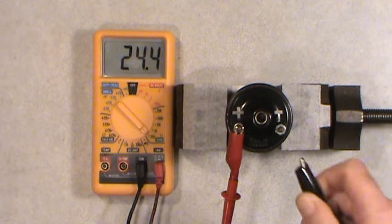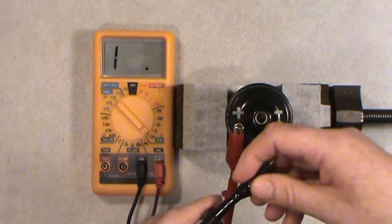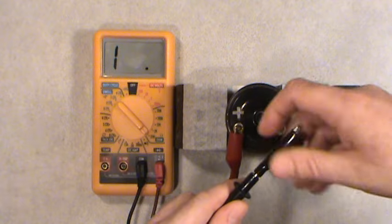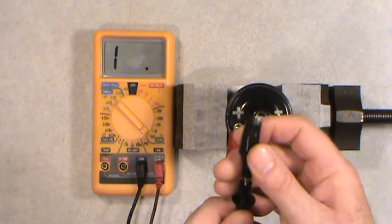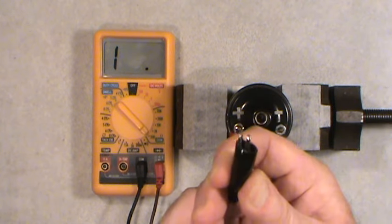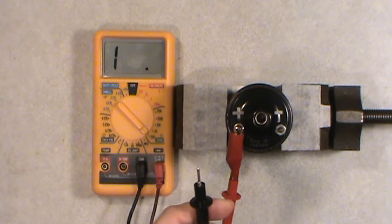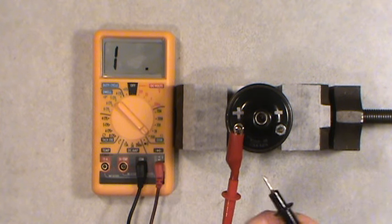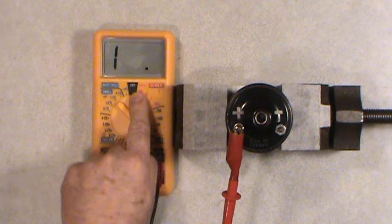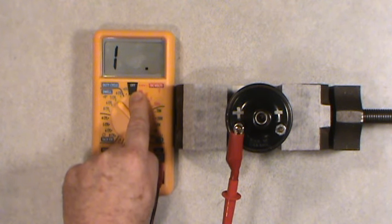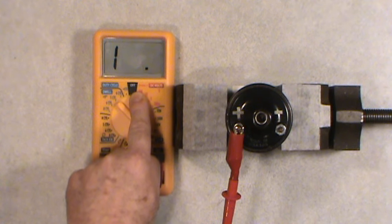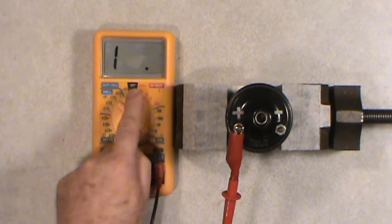Now to do the secondary side, these particular probes here, you can unscrew the alligator clips. Little teeth things there. Grab on so you have got your hands free. And we will just probe the inside of that. But remember, we are going to be going up into, oh, this one calls anywhere between 8,000 to 12,000 ohms.